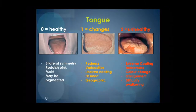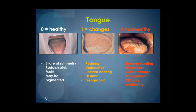The next category is the tongue. A healthy tongue shows bilateral symmetry, is reddish pink all over, and moist. It may be pigmented in relation to the normal coloration of skin. Changes would include redness due to xerostomia, or varicosities — the little blue spot visible on the bottom part of the tongue in the middle photo. Other changes include fissured tongue, that is, clefts or narrow slits visible on the surface, or geographic tongue, where areas are denuded of papilla and may appear to migrate over time.